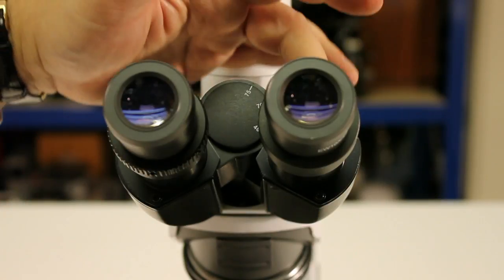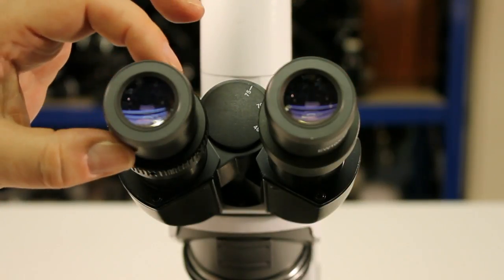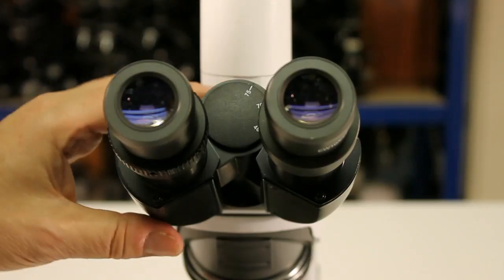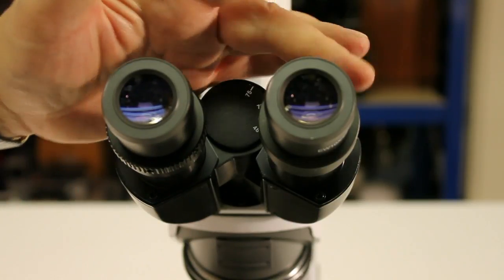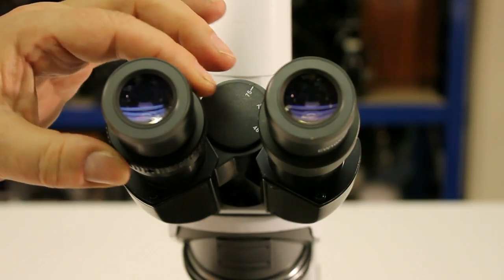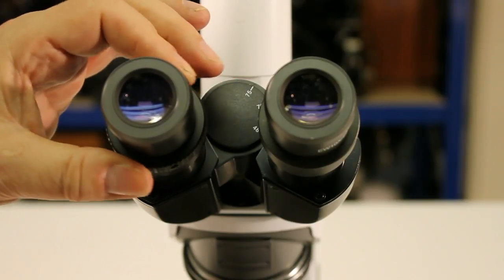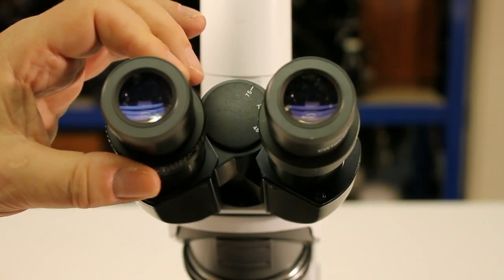So you look down this eye tube with the eye over this one closed, then focus the microscope. Then close this eye, look down this eye tube, and refocus if necessary so the specimen is in focus for that eye.